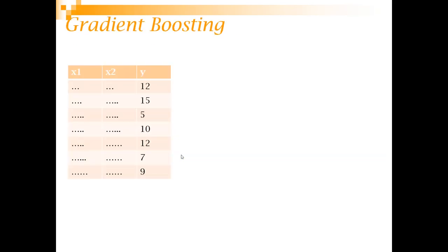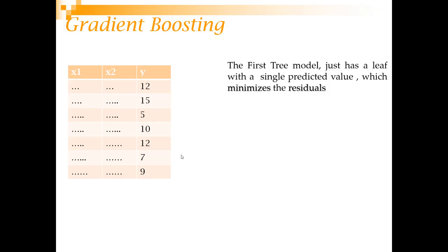Let's get started with regression. In this dataset, x1 and x2 are the independent variables and we are going to predict y — a regression problem. We build trees sequentially. The first tree will have just one leaf, meaning for all seven observations it will predict only one value. The property of that value is that it should minimize the residuals.